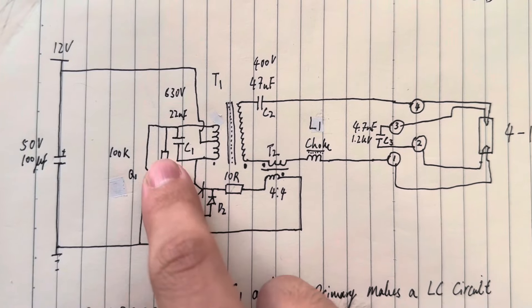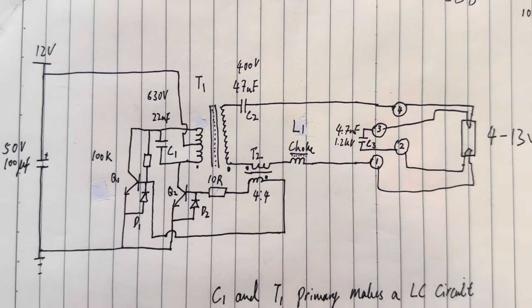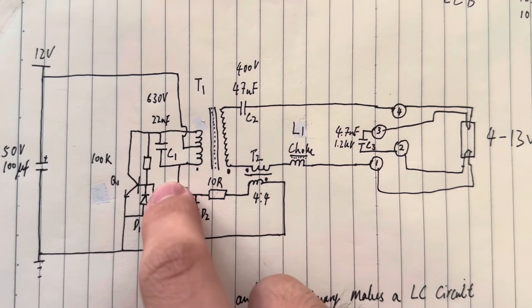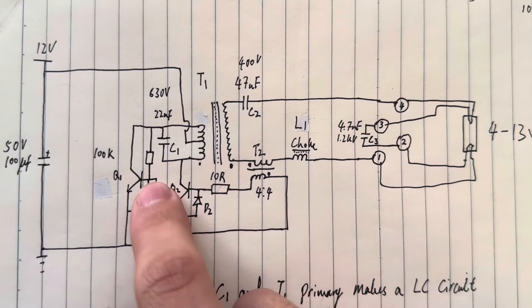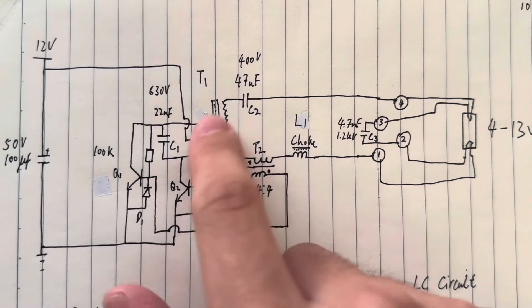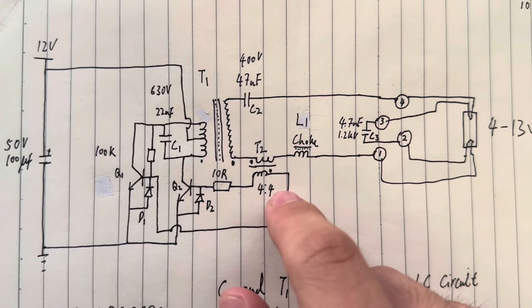Without this resistor, the circuit would not oscillate by its own. So with this resistor, it provides a small amount of base current. The small amount of base current will turn the transistor on. And here's the winding direction. It's also really important for this circuit to work correctly.